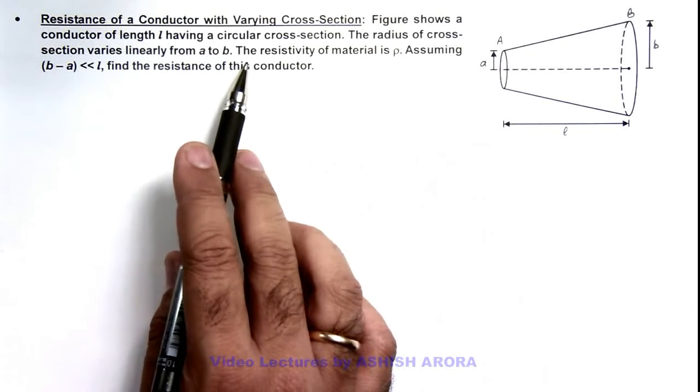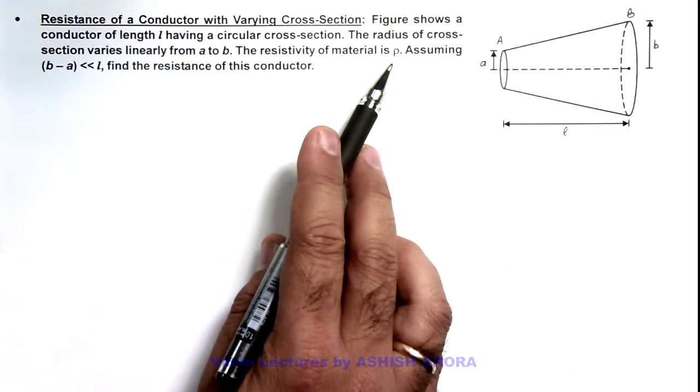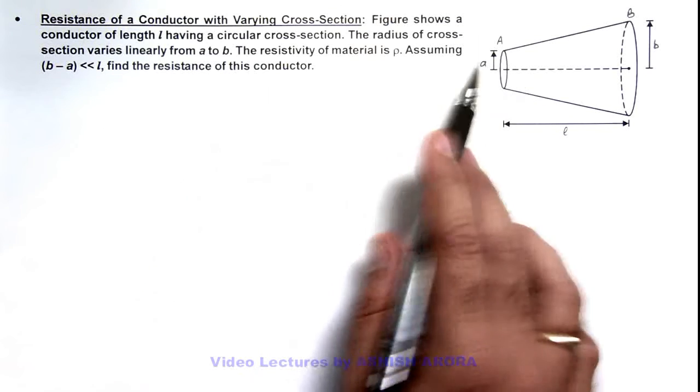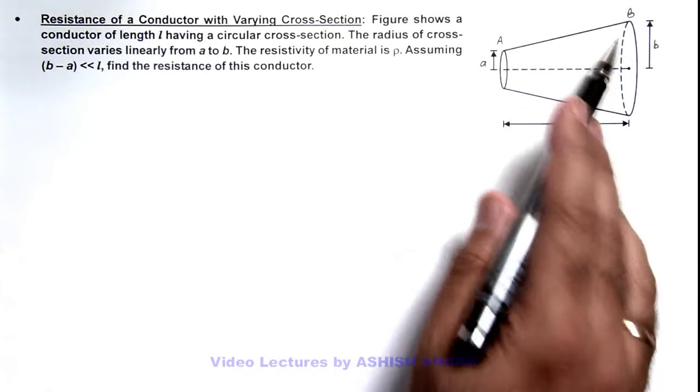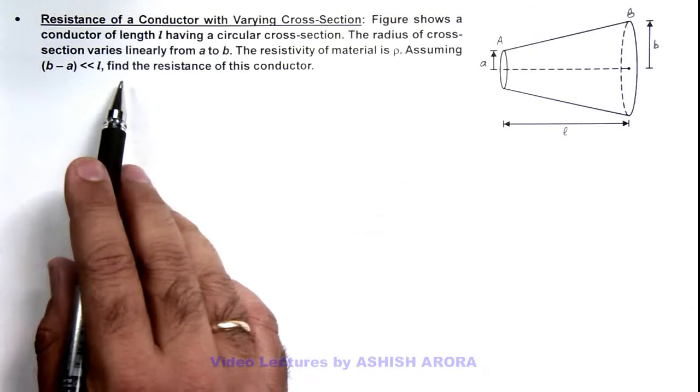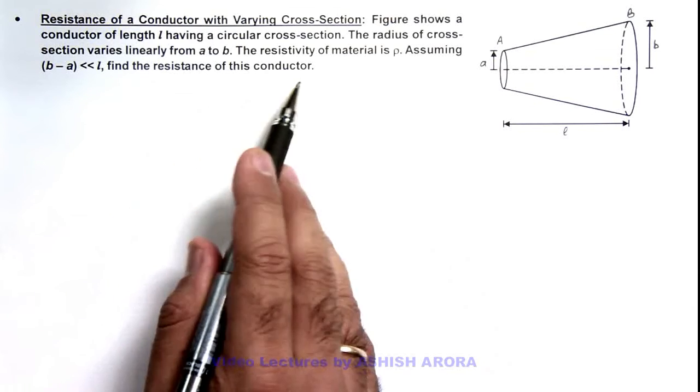The resistivity of material is given as ρ. Assuming b minus a, that means there is not much variation in the radii compared to this length. We are required to find the resistance of this conductor.